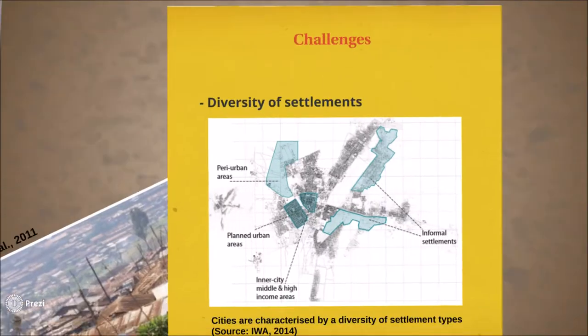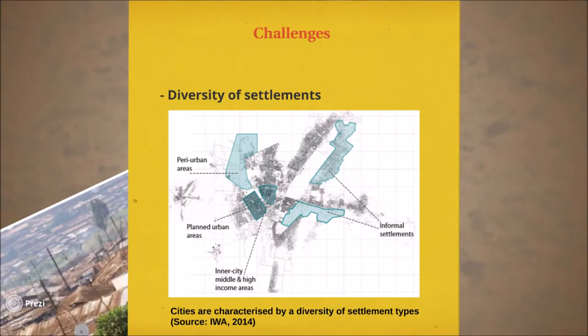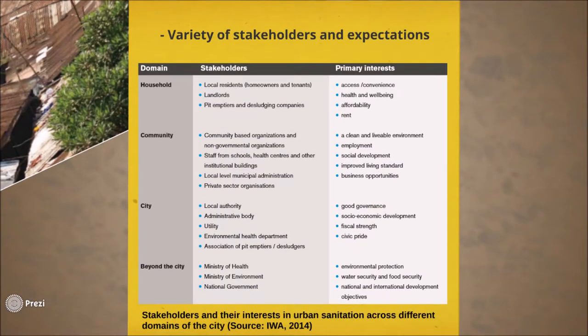There are a number of challenges to be considered in achieving sustainable sanitation. The first challenge is the diversity of urban settlements. Urban cities are heterogeneous, especially in developing countries. The diverse nature of urban and peri-urban settlements can be a deterrent to provision of sanitation where people have different needs and expectations. In addition, each stakeholder within the community has different needs, expectations and priorities.